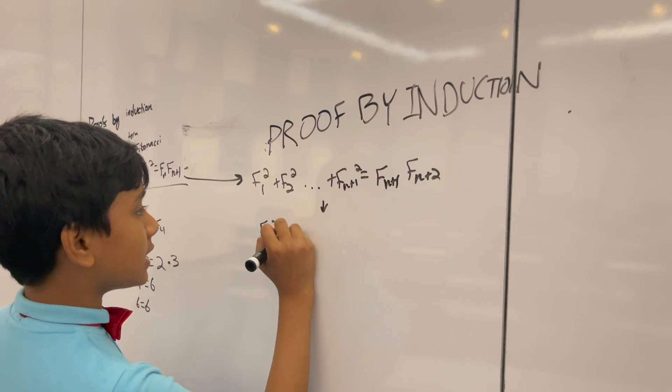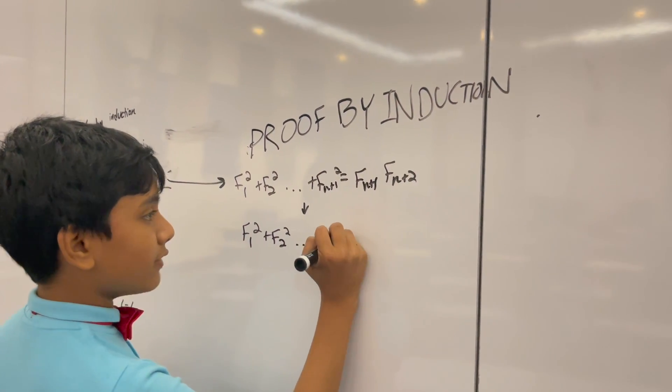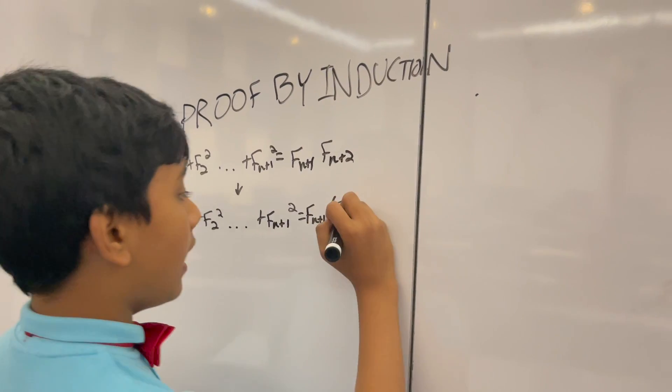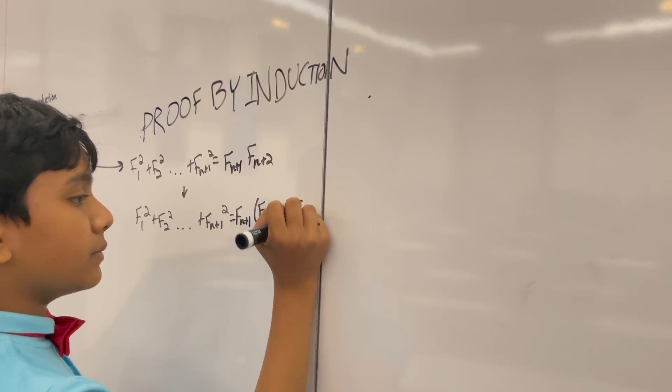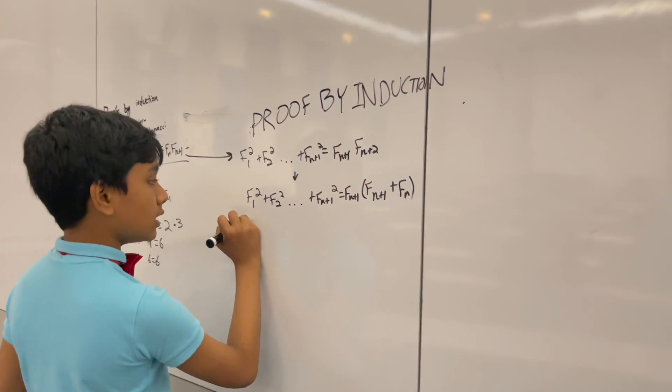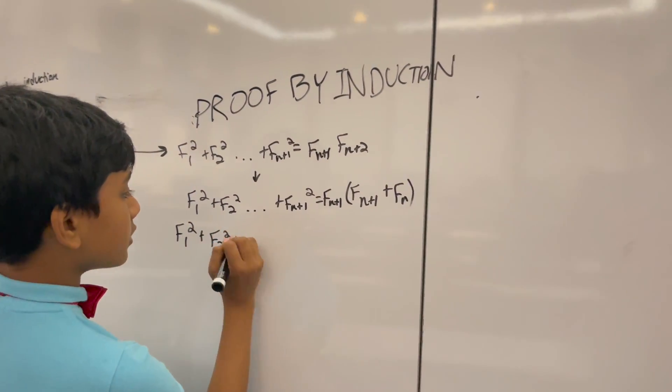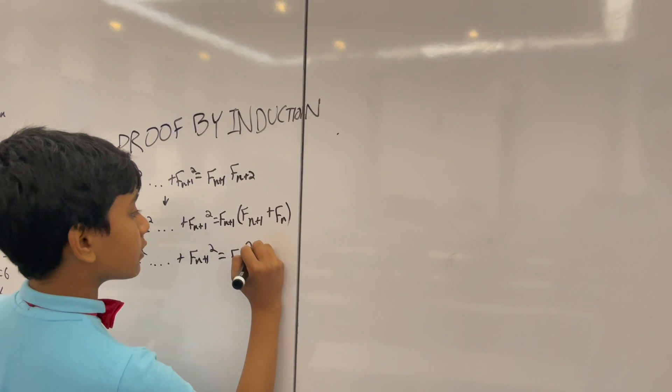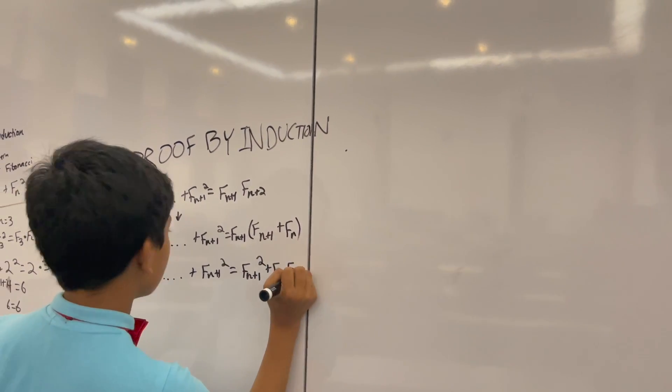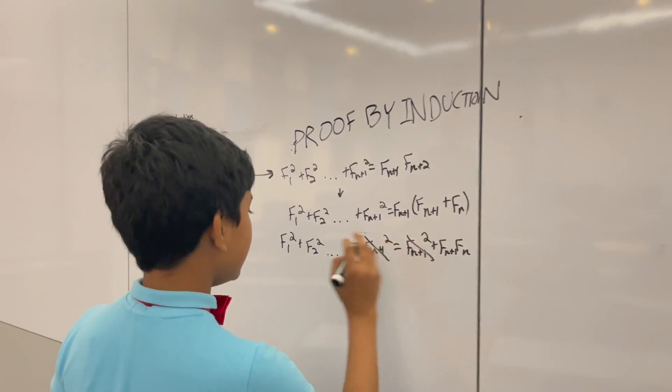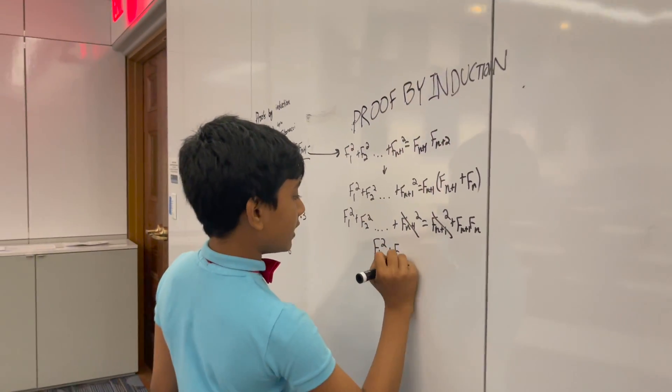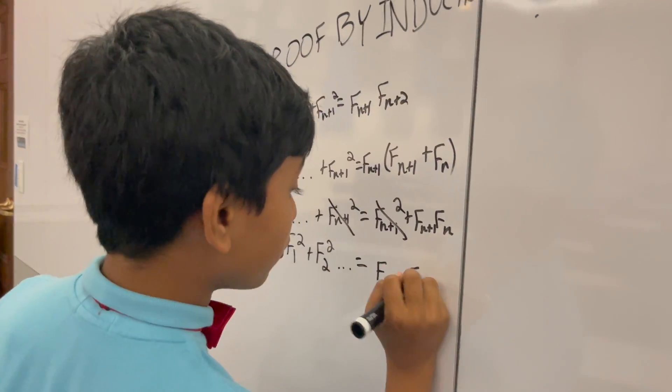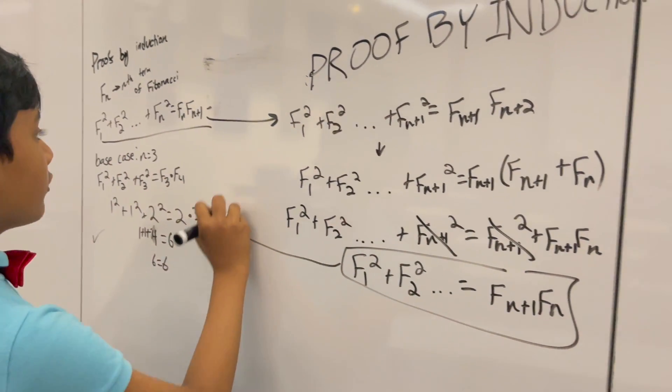This is F1 squared plus F2 squared, etc., plus Fn plus 1 squared is equal to Fn plus 1 times Fn plus 1 plus Fn. That gives me F1 squared plus Fn plus Fn plus 1 squared equals Fn plus 1 squared plus Fn plus 1 Fn. If we cancel out these on both sides, we have now simplified the thing we were seeking to prove into a statement that we have already assumed was true.